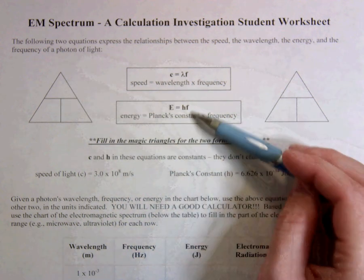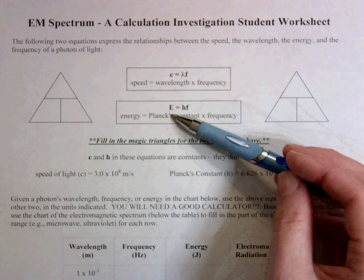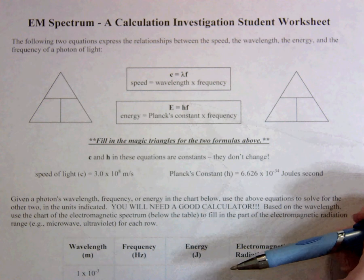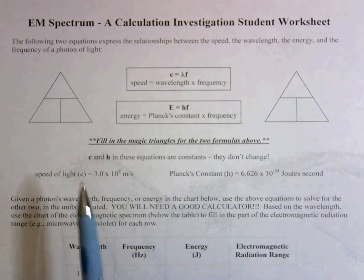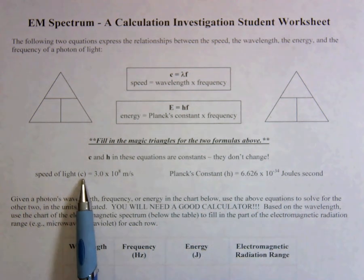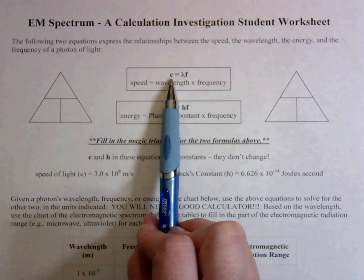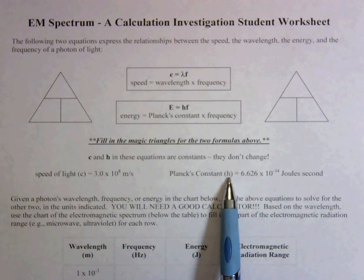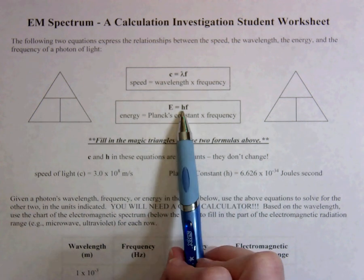In the same vein, you'll do the same thing over here for energy equals Planck's constant times frequency. It gives you the constants right here for c, the speed of light, which is this one, and h Planck's constant, which is right here.